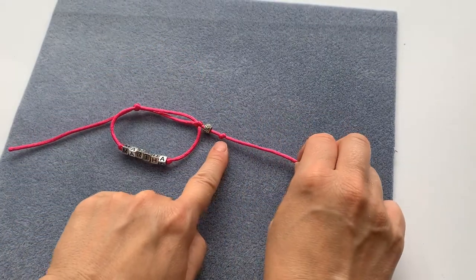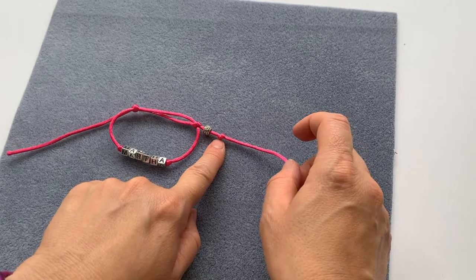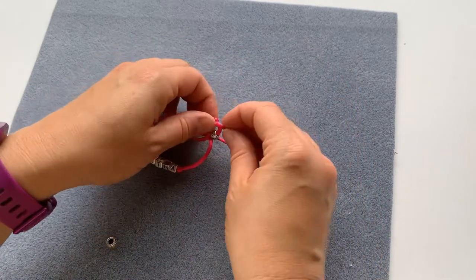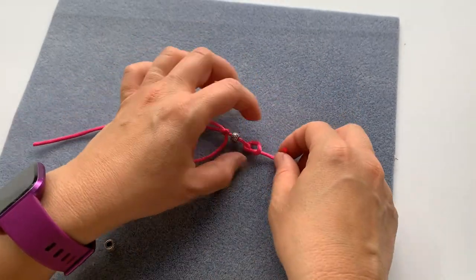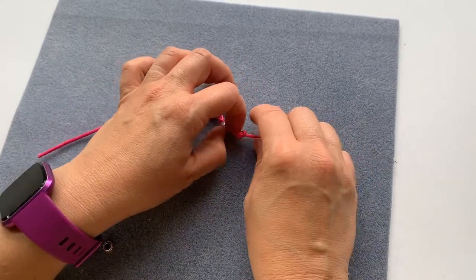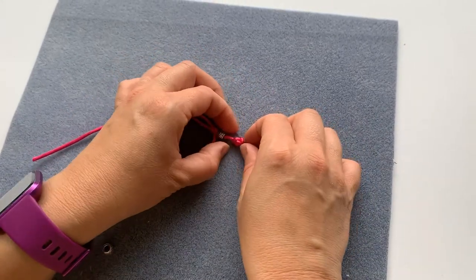Now as this is the end knot, I'm going to tie a double overhand knot there just to make sure it's super secure.